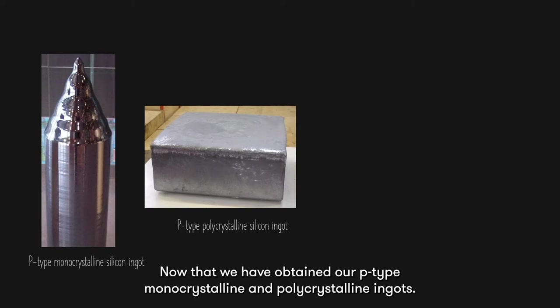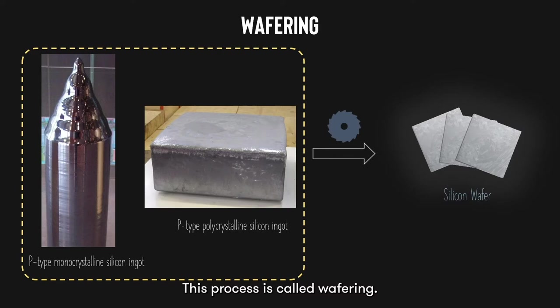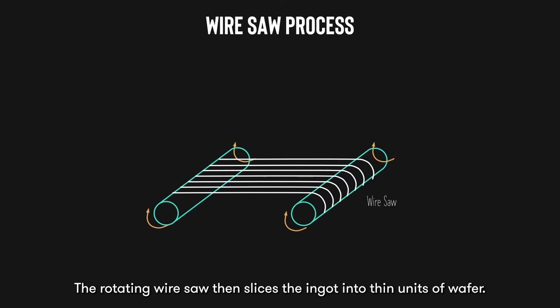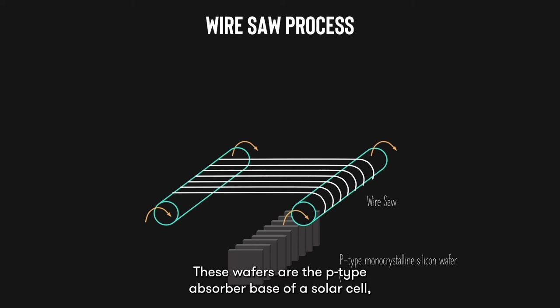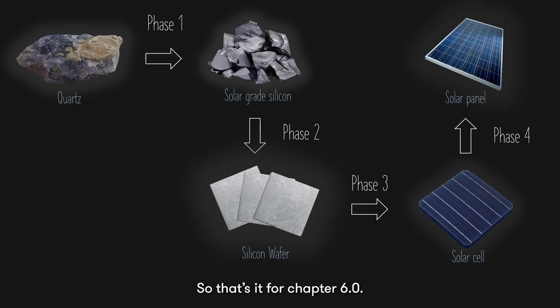Now that we have obtained our p-type monocrystalline or polycrystalline ingots, the next process is as simple as slicing the ingots into silicon wafers. This process is called wafering, and it is done by the wire saw process. The silicon ingot, for example monocrystalline silicon, is fed into a wire saw. The rotating wire saw then slices the ingot into thin wafers, which are the p-type absorber base of a solar cell, usually about 200 microns thick.